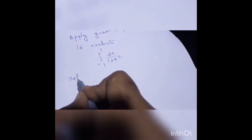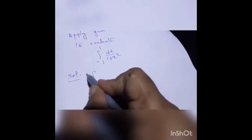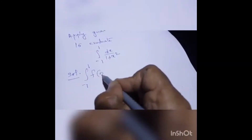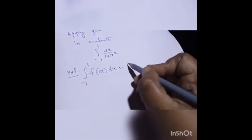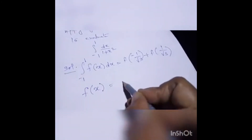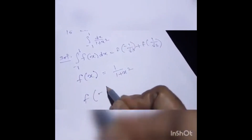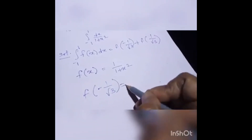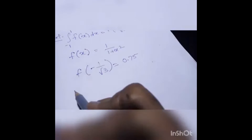For the solution, we know the formula: integration of minus 1 to 1 of f(x) dx equals f(minus 1 over square root of 3) plus f(1 over square root of 3). In our question, f(x) equals 1 over (1 plus x squared). First, find f(minus 1 over square root of 3) — you will get 0.75. Next, find f(1 over square root of 3) — that also gives 0.75.